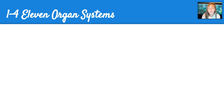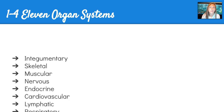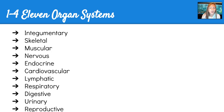There are 11 organ systems in the body that we are going to be covering. Some of them we will get into more detail than others, but this is a list — each unit that we go over is going to cover a particular system, and some of them will go hand in hand with each other as well.